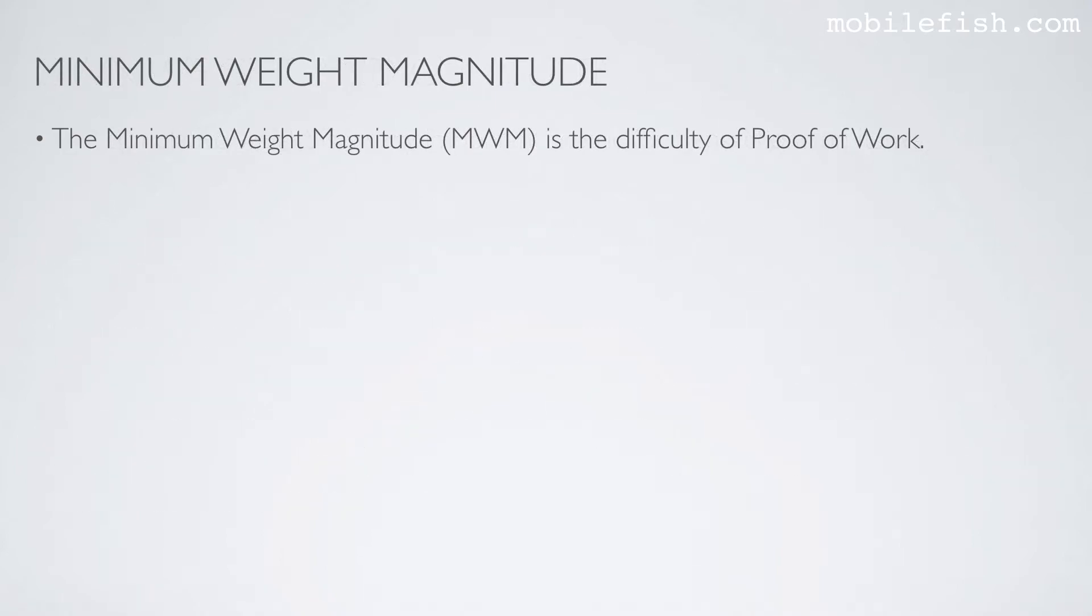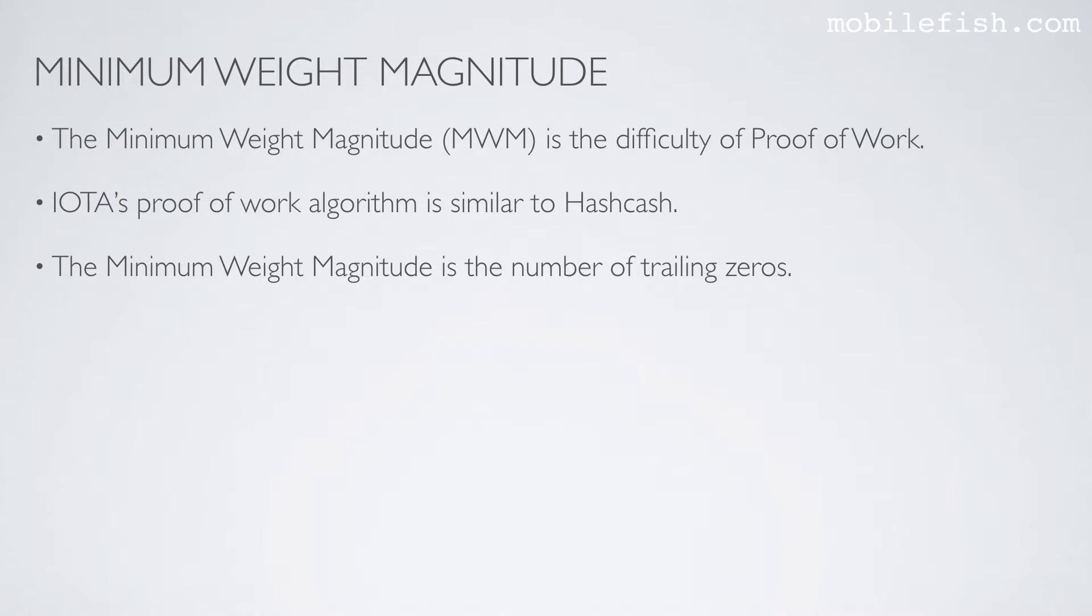The minimum weight magnitude is the difficulty of proof-of-work. IOTA's proof-of-work algorithm is similar to hashcash. The minimum weight magnitude is the number of trailing zeros.